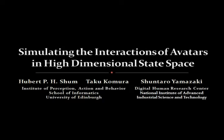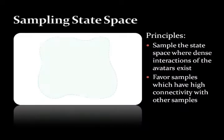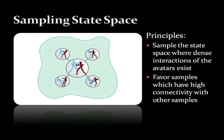In this research we propose a new method to efficiently plan the movements of an avatar interacting with another one. We efficiently collect samples by exploring the subspace where dense interactions of the avatars exist and favoring samples that have high connectivity with the others.